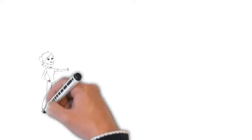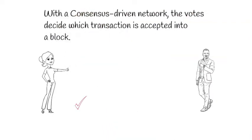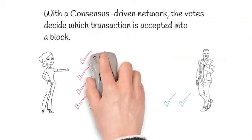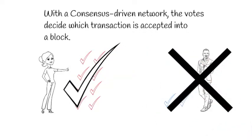If we consider the same scenario in a consensus-driven network, the votes decide which transaction is accepted into a block. In this case, it was Chloe's.